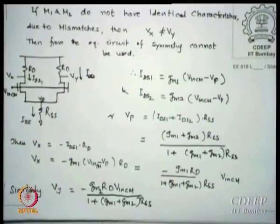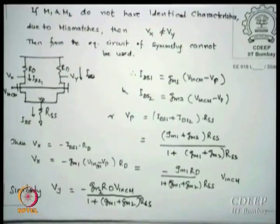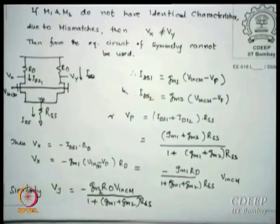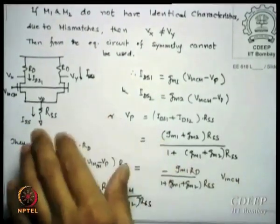For larger CMRR: the closer gm1 and gm2 are (smaller delta_gm), the better the CMRR. Larger gm also helps — meaning larger currents or larger transistor sizes (larger W). However, increasing W increases parasitic capacitances, which reduces bandwidth. So one must balance: you cannot simply increase W/L to improve CMRR without affecting bandwidth. Making RSS very large — by using a better current source — also directly improves CMRR.